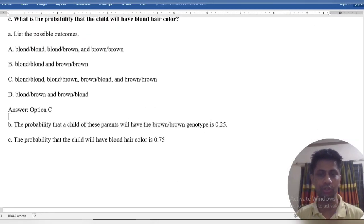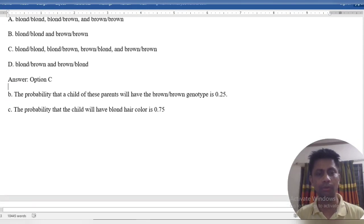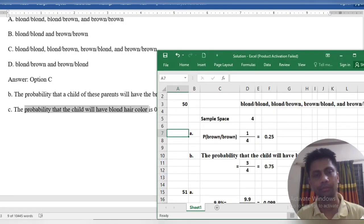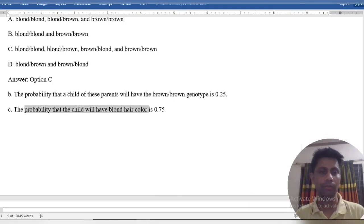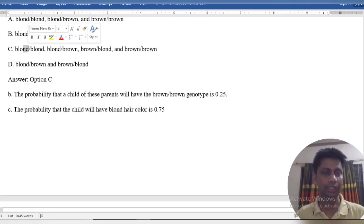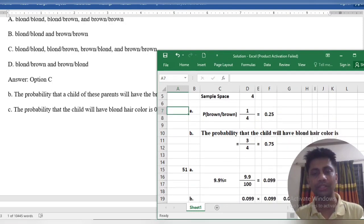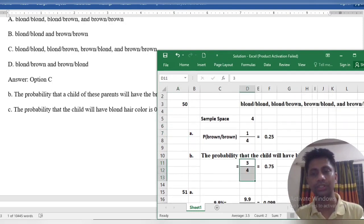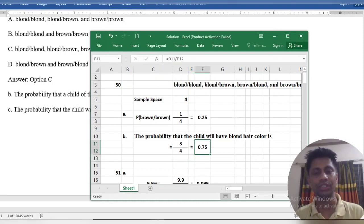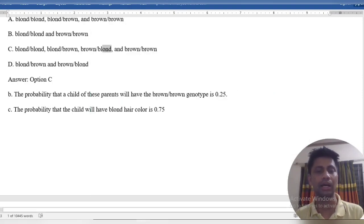The probability that the child will have blonde hair color: we know there is blonde here, blonde there, and blonde there—three possible outcomes with blonde. The total number of outcomes is four, so our answer is 3 by 4, which equals 0.75. The correct answer is 0.75. Thanks for watching this video, and we will see you again next time.